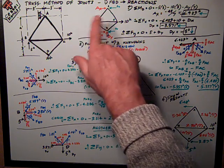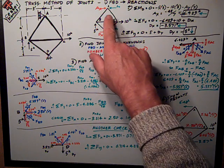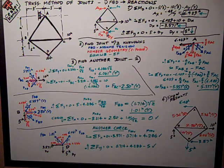The steps on solving a method of joints truss is to first do a free body diagram of the entire truss, treat it as a rigid body and solve for the reactions.